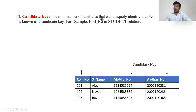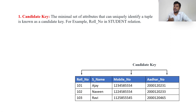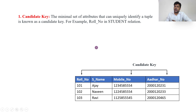First, candidate key. A candidate key is a minimal set of attributes that can uniquely identify a tuple. It is a set of one or more attributes. Candidate keys are unique — for example, a roll number cannot be duplicated, and a mobile number is unique since two people cannot share the same mobile number. So roll number, mobile number, and Aadhar number are all candidate keys.